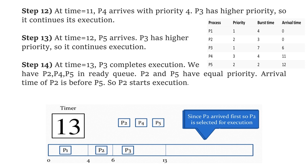P4 has a priority of 3, but compared to that, P3 has higher priority so it continues its execution. At time 12, P5 arrives. P3 has higher priority than P5, so it continues its execution. At time 13, P3 completes its execution with burst time 7. At that point, P2, P4, and P5 will be in the ready queue.